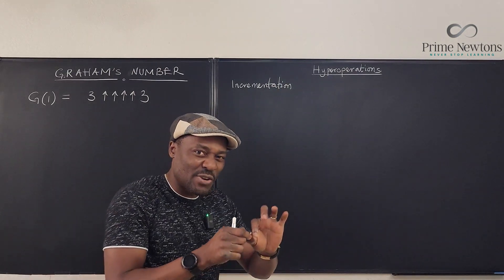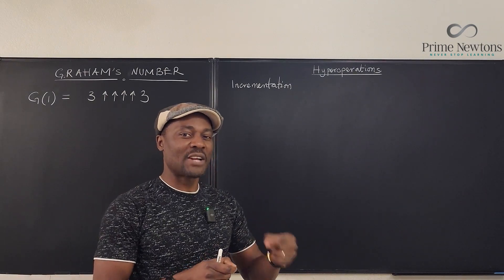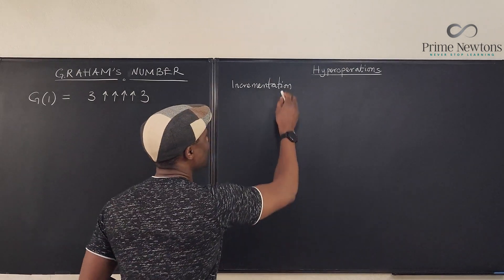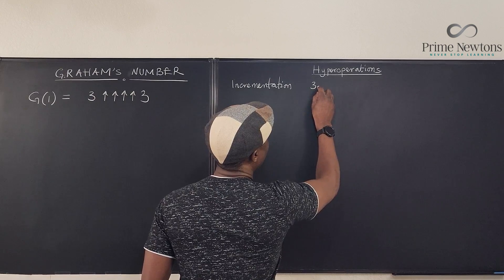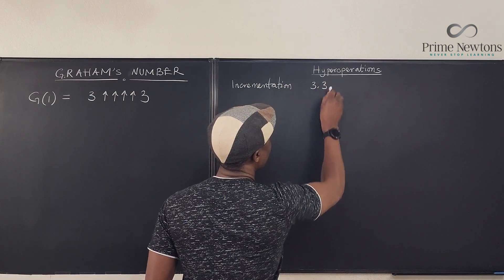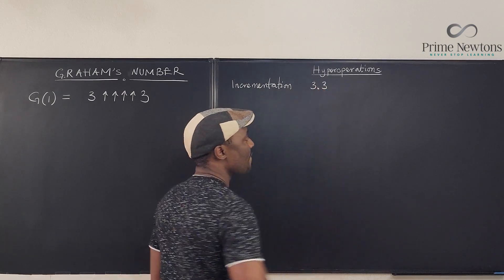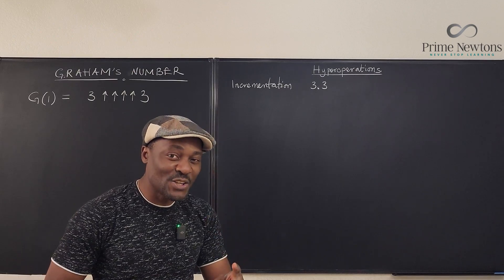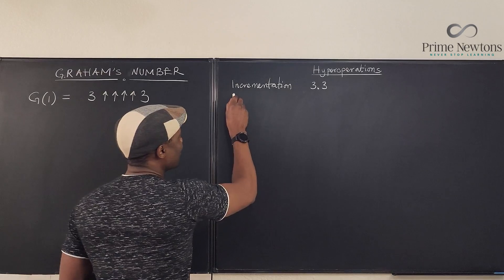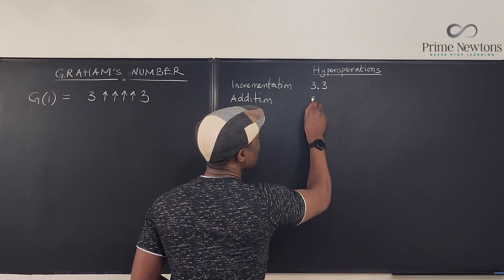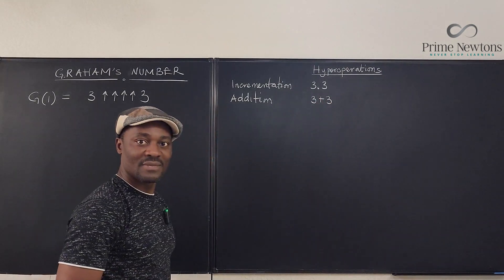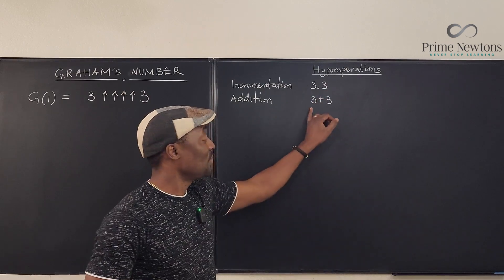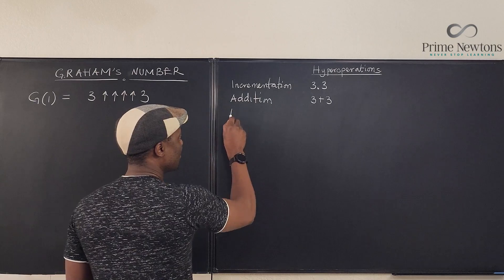Incrementation is just increasing a number by a small amount — for example, increasing 3 to 3.1. It is the very first level of any increase. The second operation is addition: adding two threes means you're adding a bunch of increments until you reach another three. The next operation is multiplication, where you repeat addition a certain number of times.